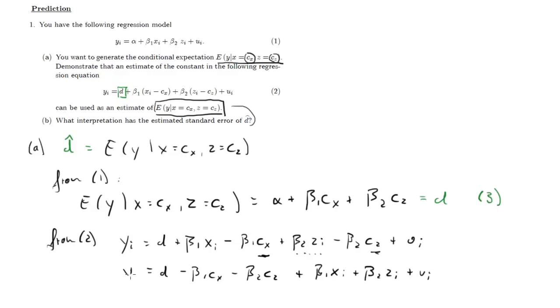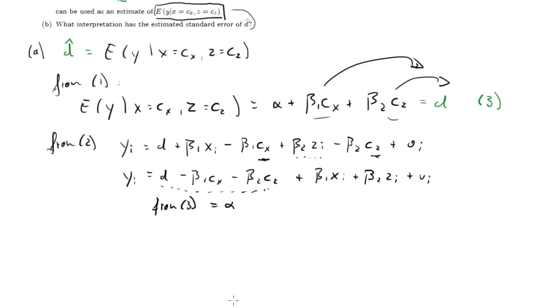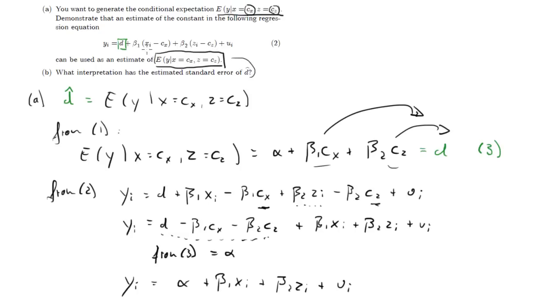Now I should just bring the terms with the c's, that guy and that guy, I'll bring that further to the front, just to see what's happening. So I'll have d minus beta one cx and minus beta two cz plus beta one xi plus beta two zi plus ui. And now we can use equation three. This guy here is just the same as alpha. You can see that from three, if we bring both of these terms across to the other side, you'll get alpha equals d minus these two terms. And that's what we have here. So from three, we know that this equals alpha. So therefore, we'll have yi equals alpha plus beta one xi plus beta two zi plus ui.